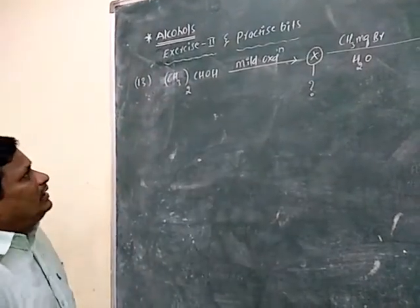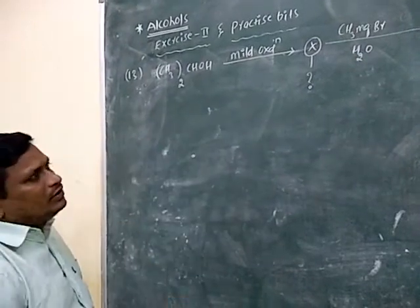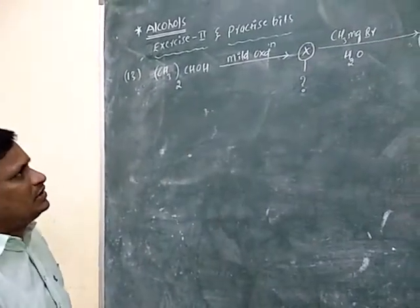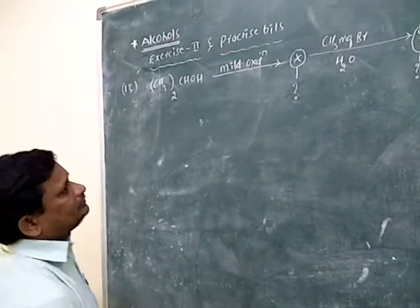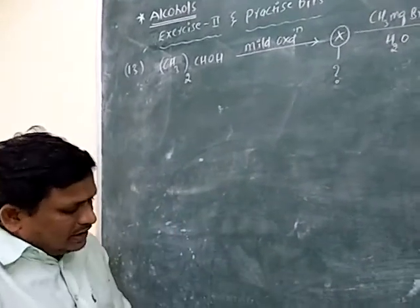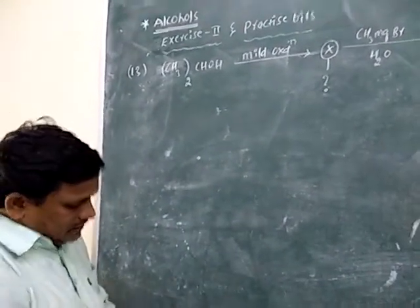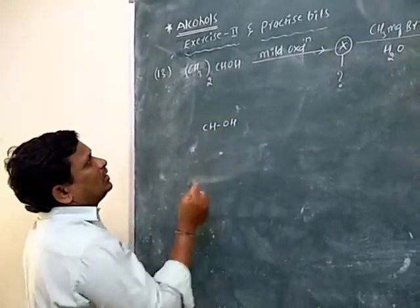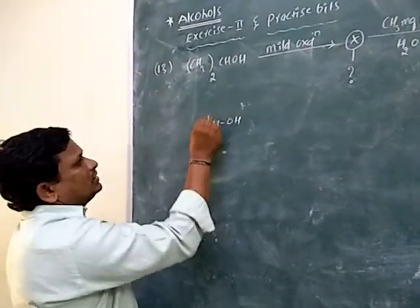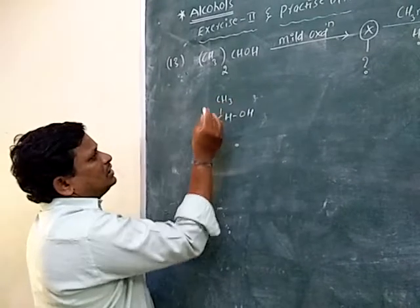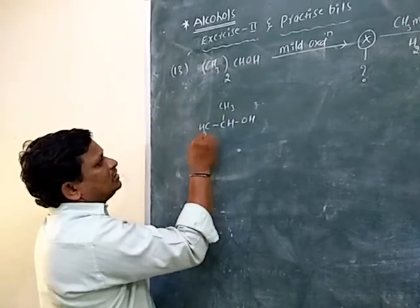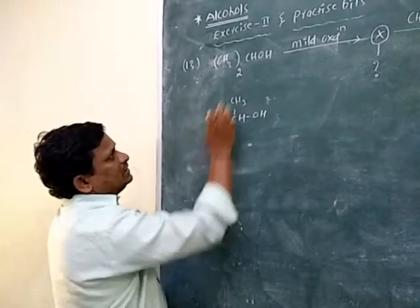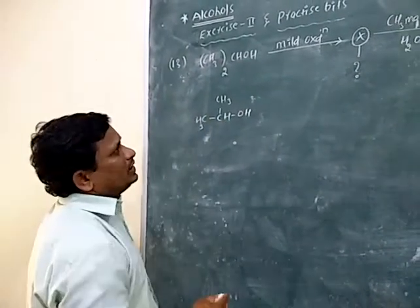The secondary alcohol is involved in a mild oxidation reaction. The structure is CH3CHOH with CH3 groups — that is, CH3CH(OH)CH3. This is a secondary alcohol undergoing mild oxidation.